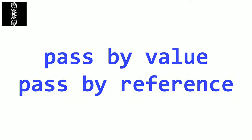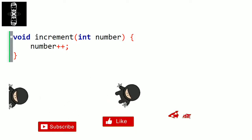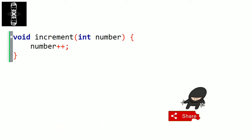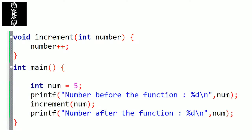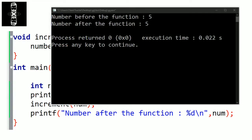Let's see an example. Let's create a simple function that increments the passed parameter. We have void because the function returns nothing, then the name, and a number as a parameter. Inside we write number++ to increment the parameter. Now let's call it from the main function. If we print the value of the variable after calling the function and compile, you can see that it didn't change, because we passed the parameter by value, so it didn't modify the original one.